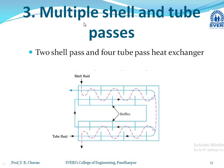The third construction type is multiple shell and tube passes. Instead of one compartment, there are multiple compartments. For example, in a two shell pass, four tube pass heat exchanger, there are two shell compartments and the tube fluid passes four times in total — two passes per shell.